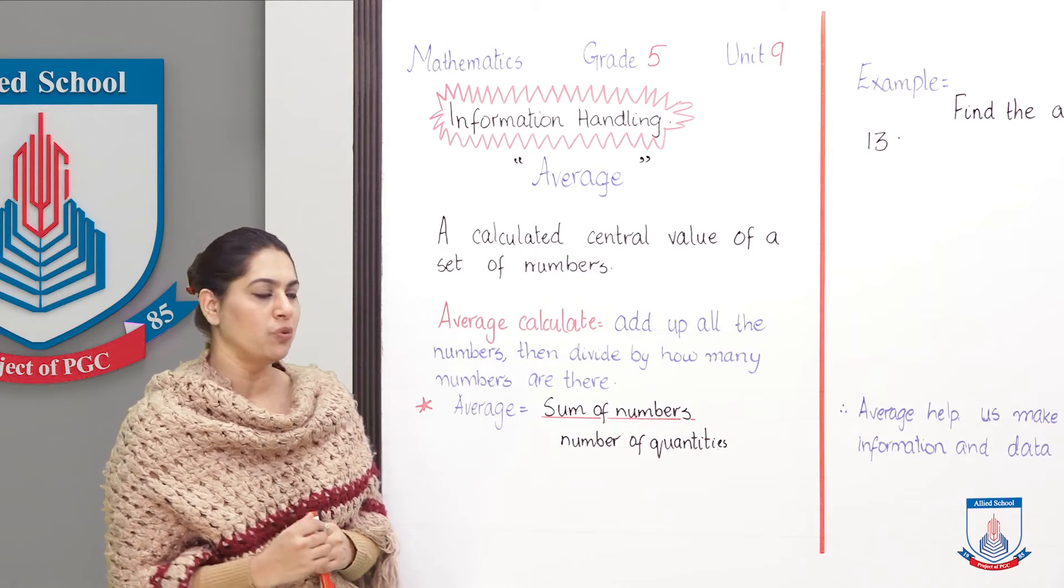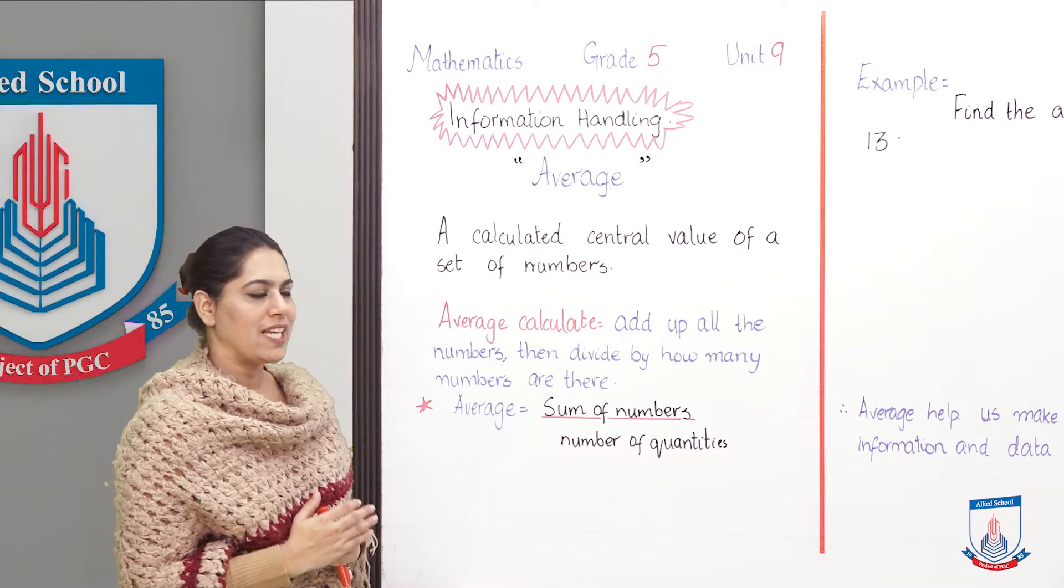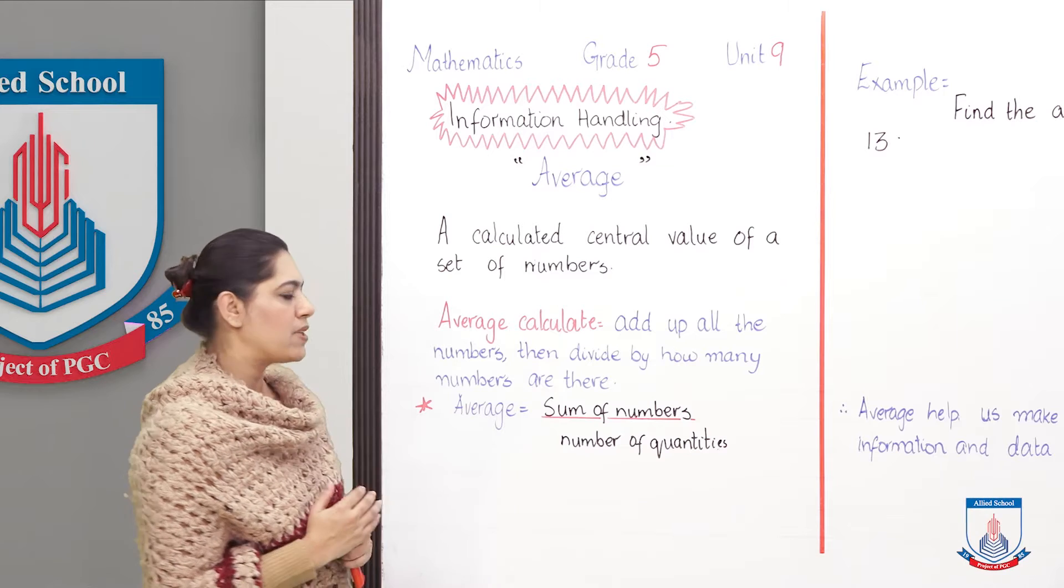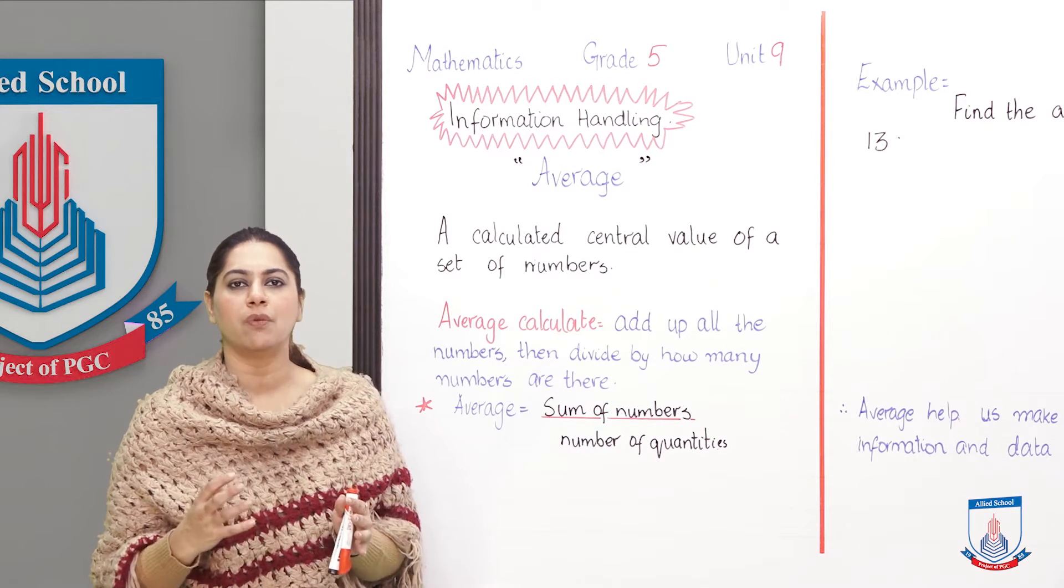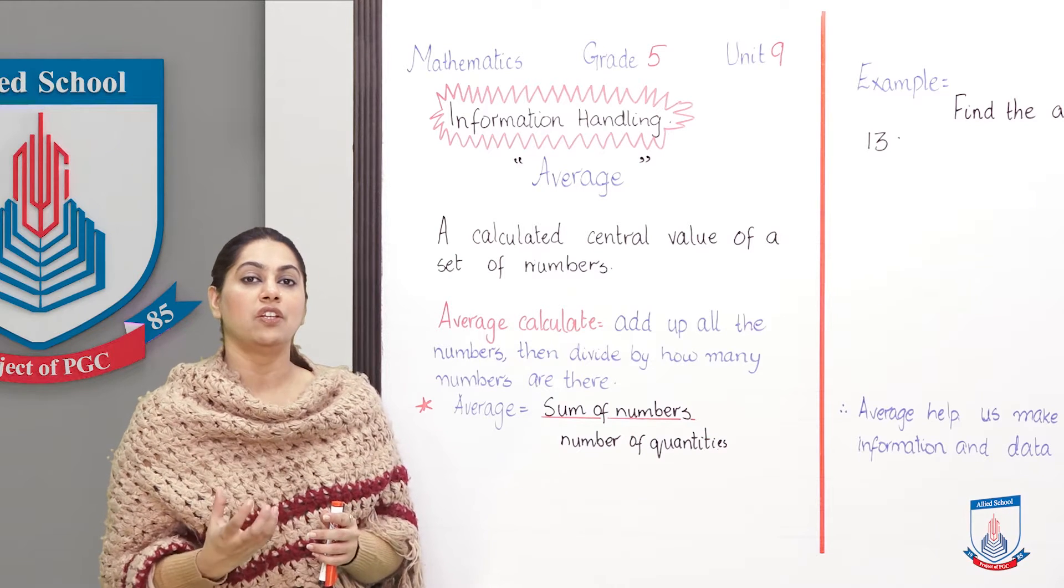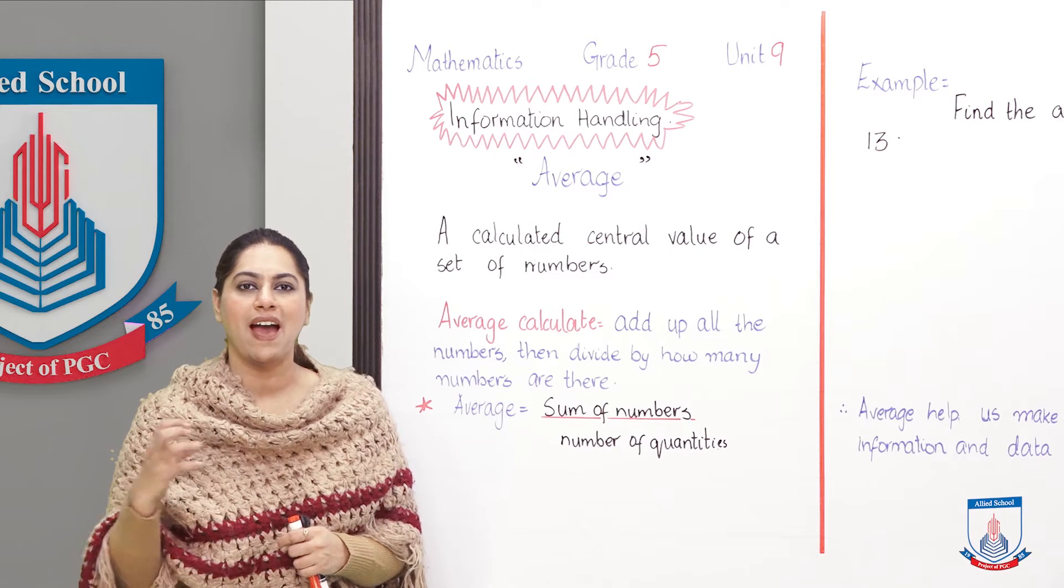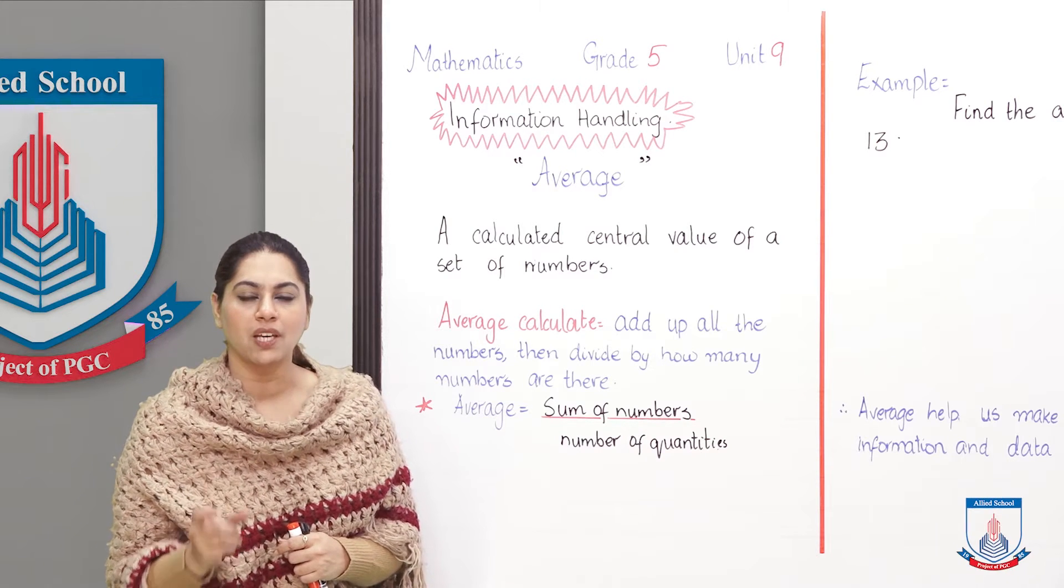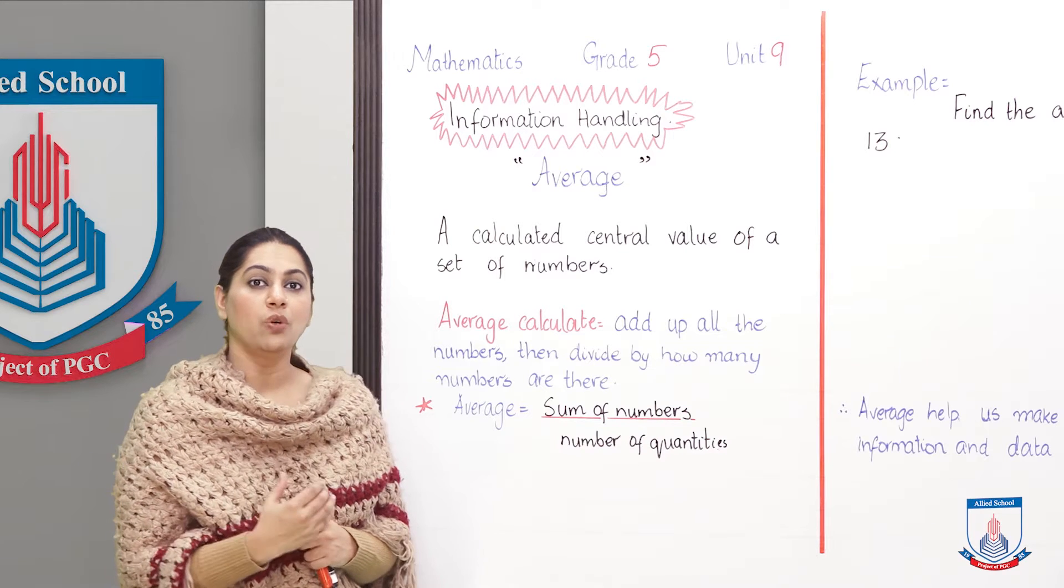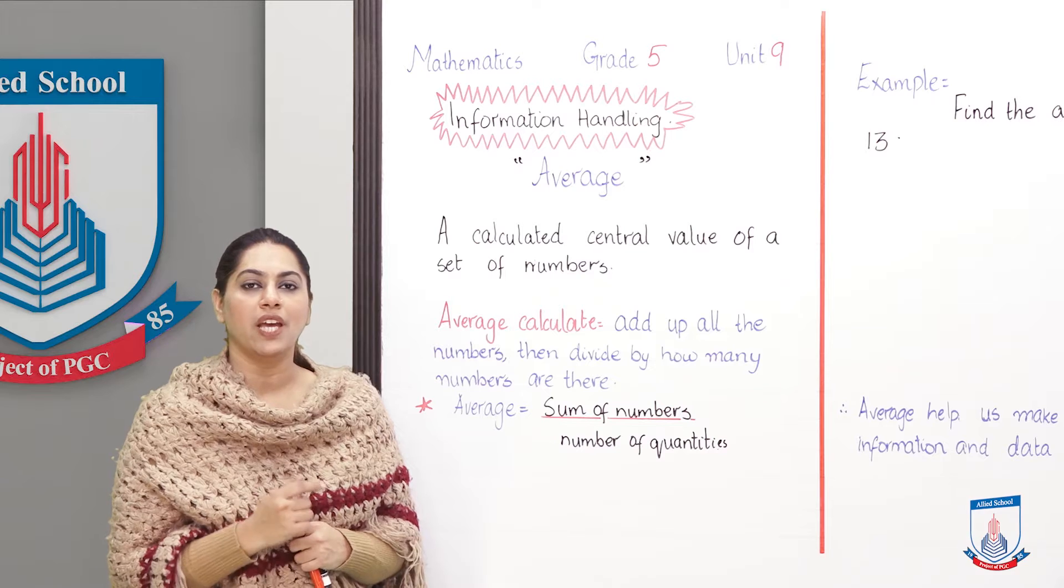We find out average through a formula. What is the formula? Add up all the numbers and then divide by how many numbers are there. If you have a set of numbers or data given and you have been asked to find out its average, you will add those numbers and divide by the number of quantities. Then you can find out its average. Now I am going to explain it to you with the help of an example, that how to calculate an average.